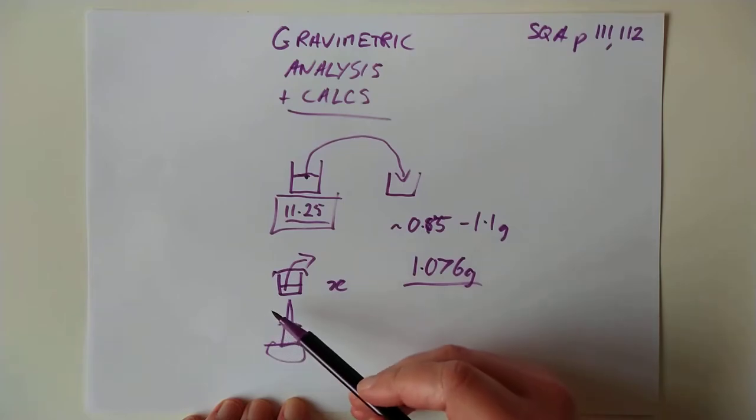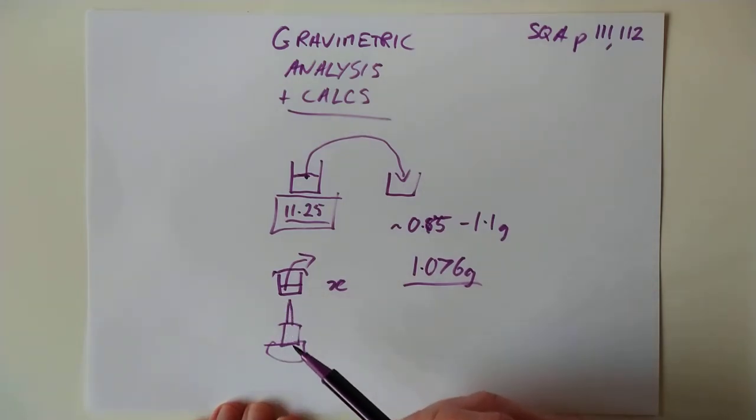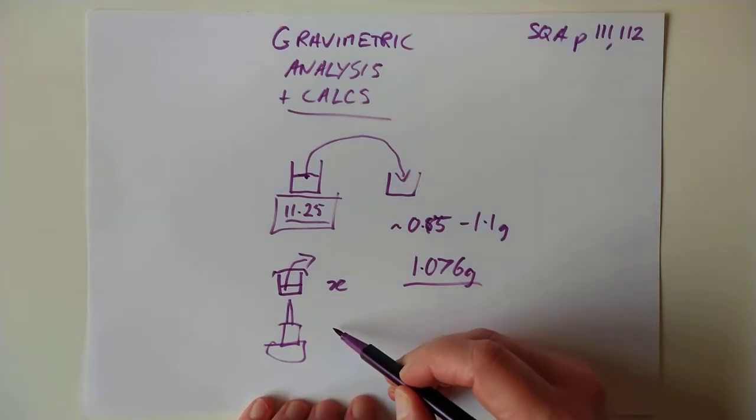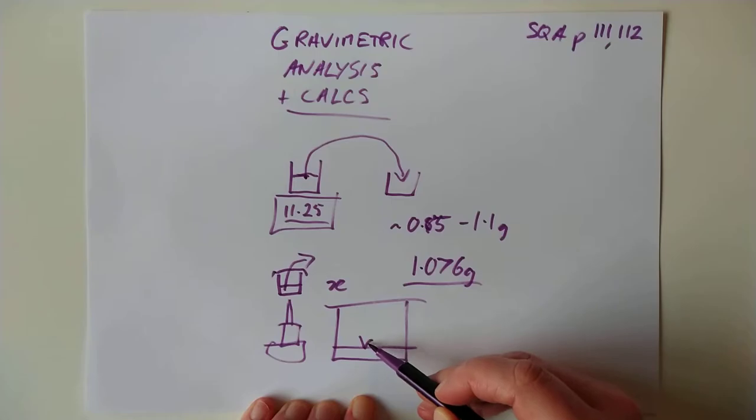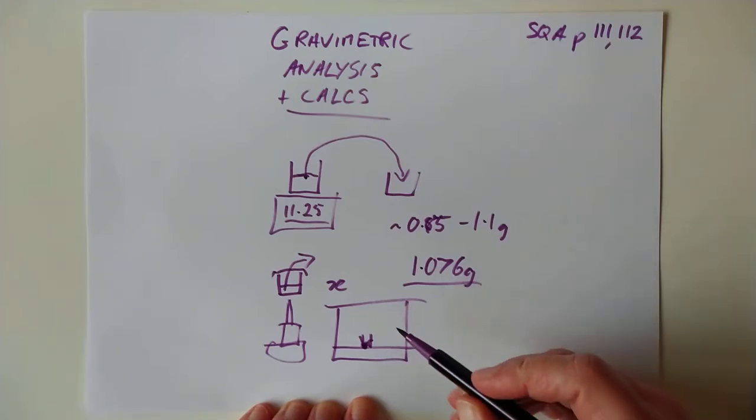So in theory, you're always supposed to heat and cool with the lid on. So I did say cooling there. You can't simply kill the Bunsen lever to cool down on the bench because it will soak all the water back in again that you just blasted out. So you need to pop it into your desiccator.